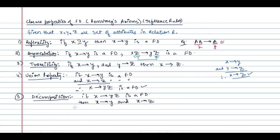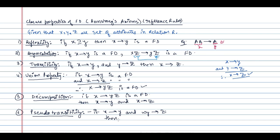The next one is called pseudo-transitivity. If X determines Y and WY determines Z, then XW determines Z also holds.